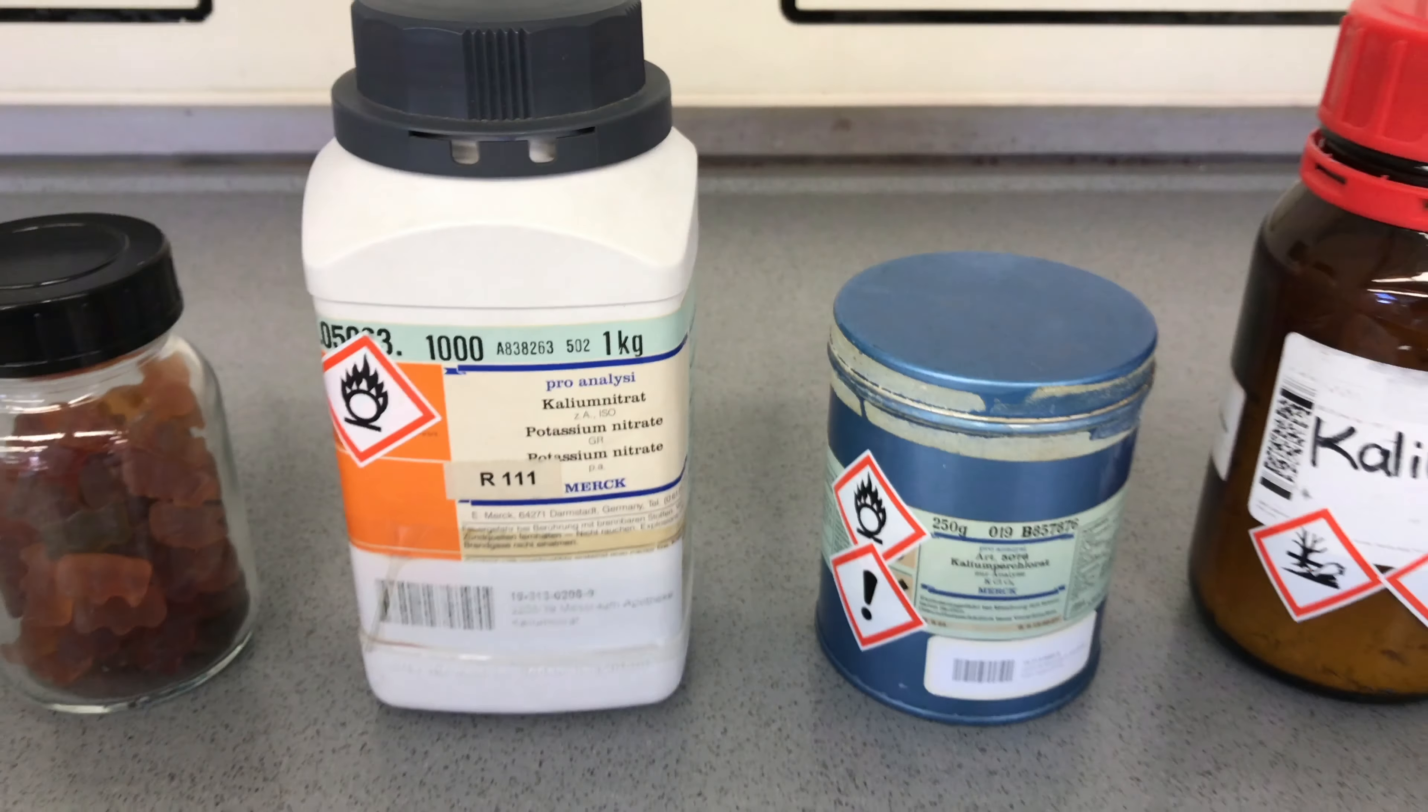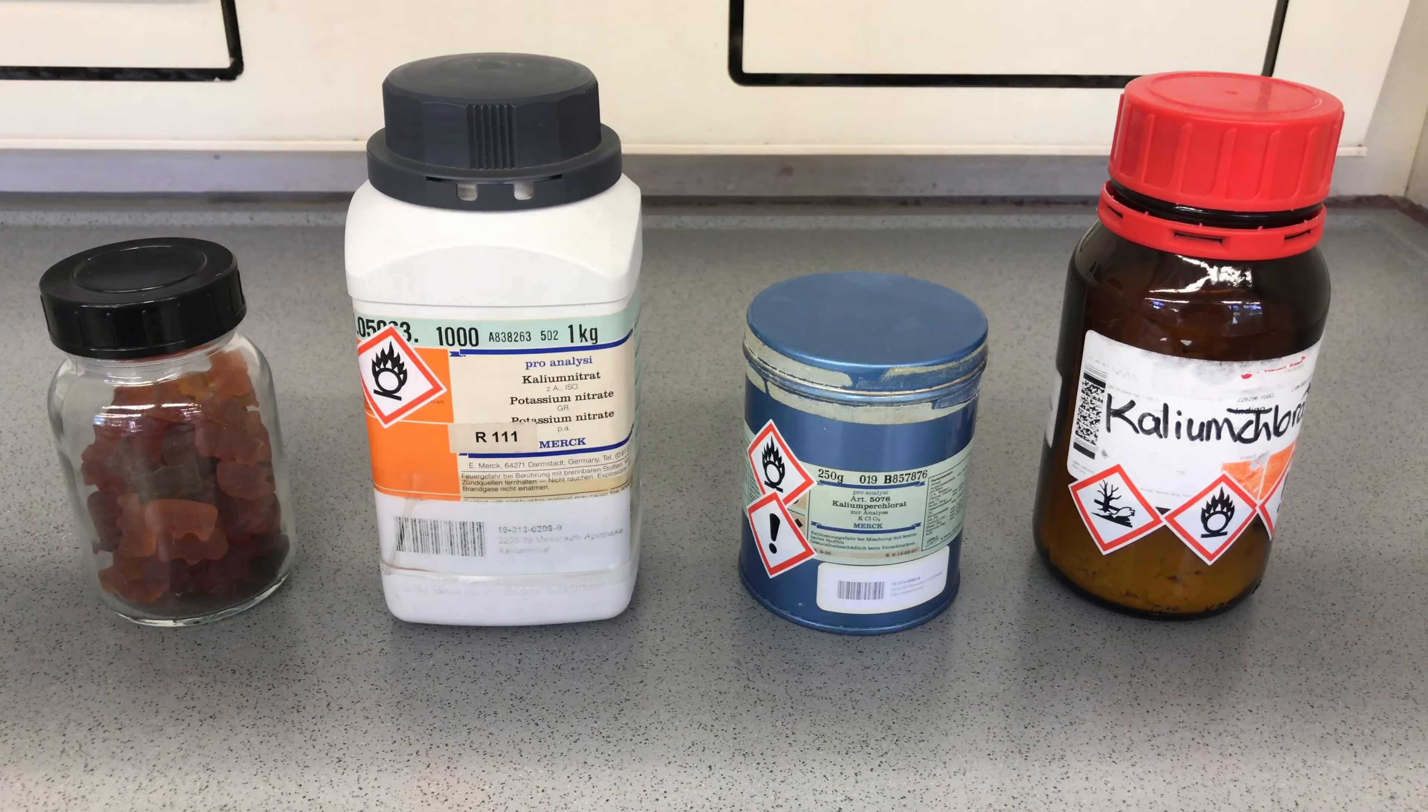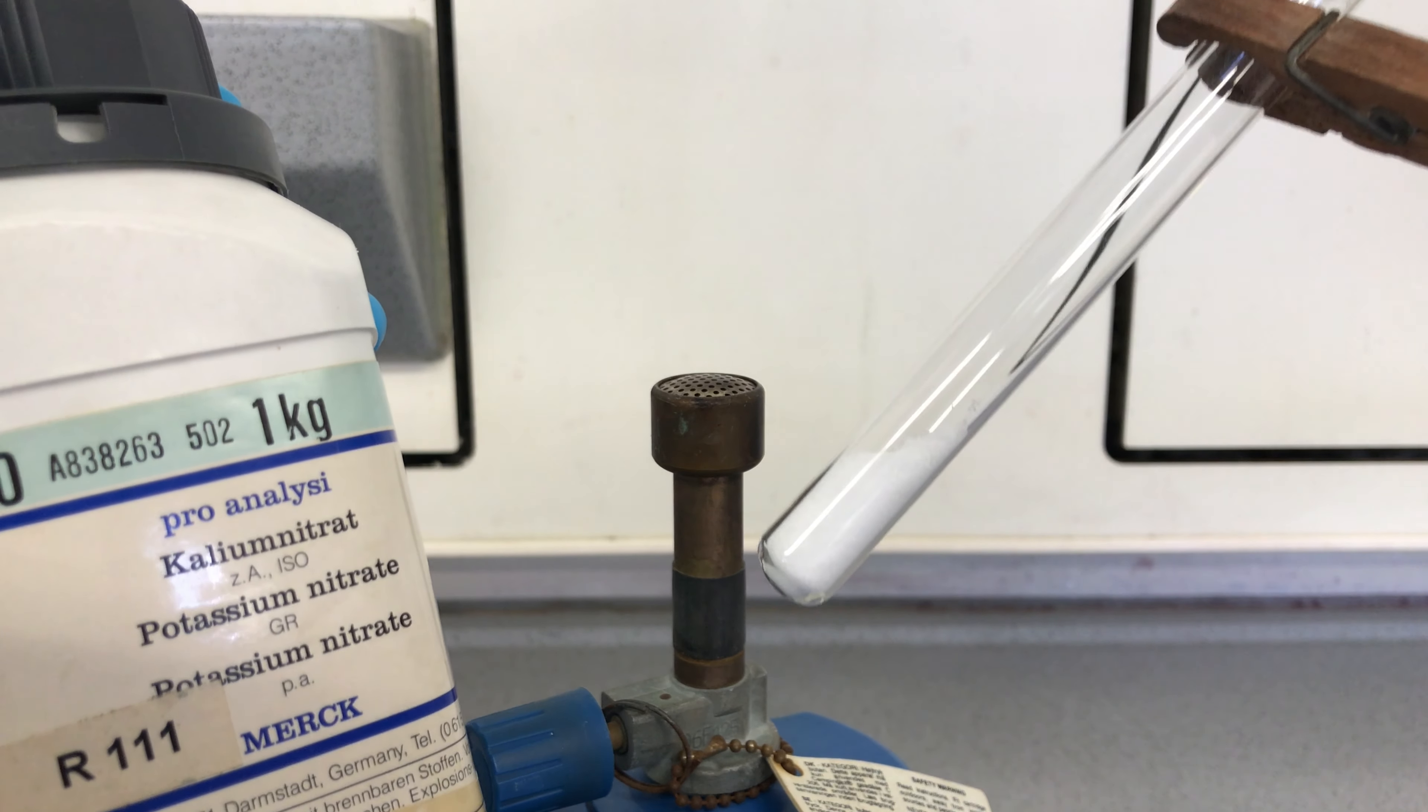Today we are going to drop a gummy bear into some molten oxidizing agents. Let's start with potassium nitrate.